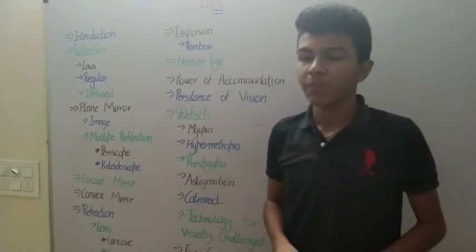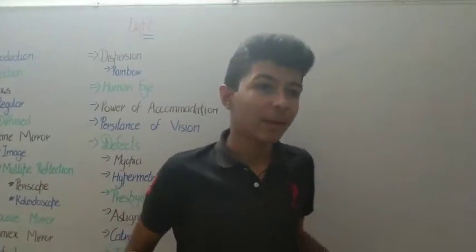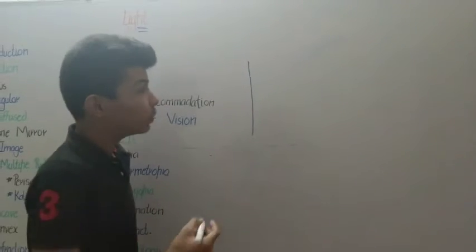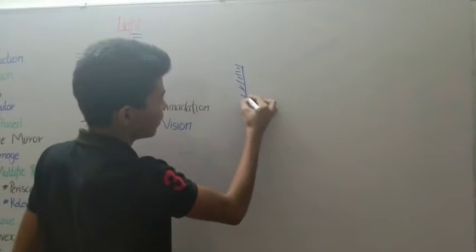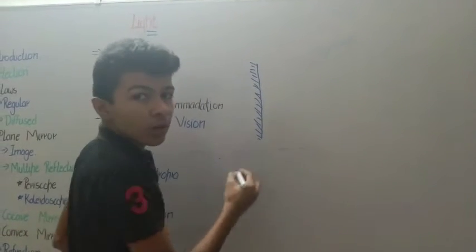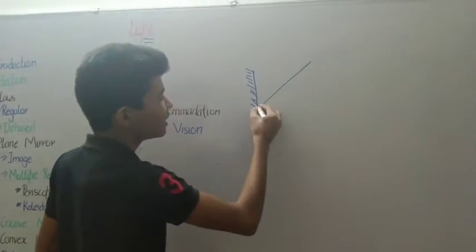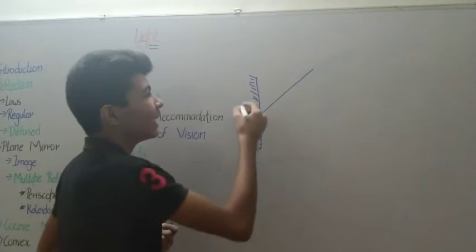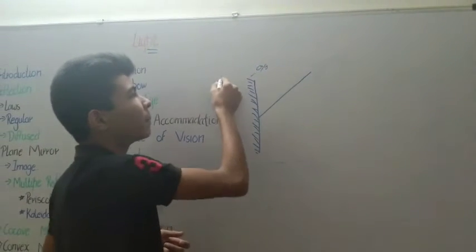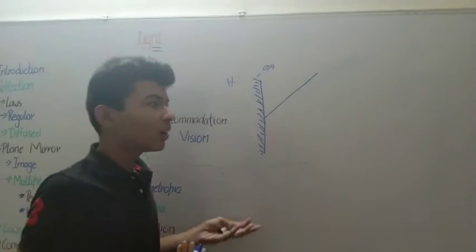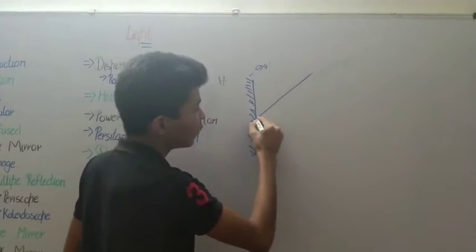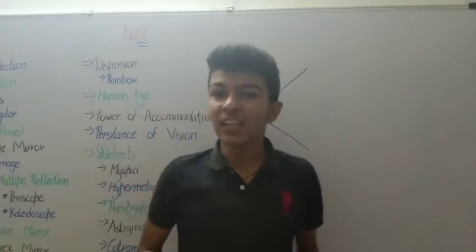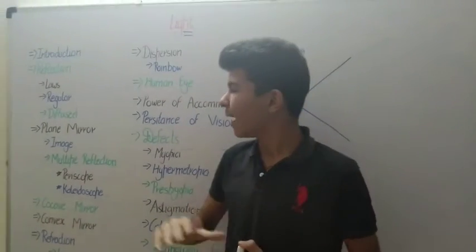Now let's move to the plane mirror. A plane mirror is a smooth glass which has a mercury coating on the outside. What this does is prevent light from being absorbed inside it. About 99% of light is reflected and only 1% is absorbed, which we are not considering. So when light hits a plane mirror, it bounces back exactly.